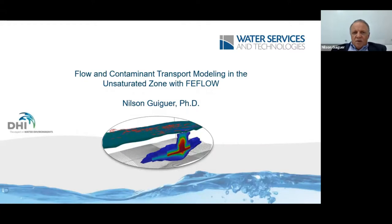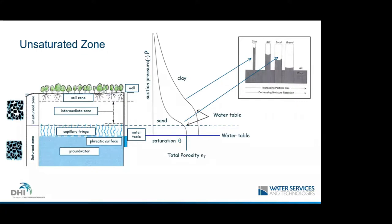First we are going to talk about unsaturated zone principles. The saturated zone is where the pores are totally filled with water; in the unsaturated zone, the pores are partially filled with water and partially filled with air. In the saturated zone, it can be divided into two parts: the area where the pressure is positive — meaning water will rise into a well placed there — and the part of the saturated zone where, although it is totally saturated, there is a negative suction pressure. This suction pressure is caused by capillary forces and is called the capillary fringe.